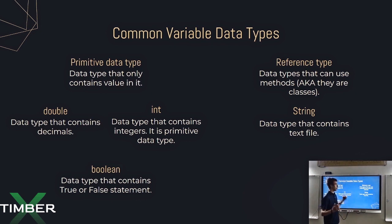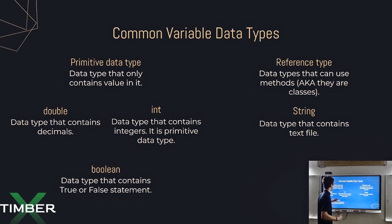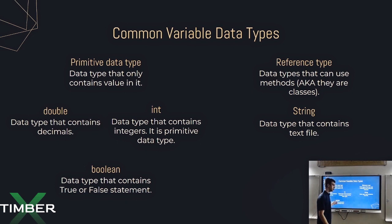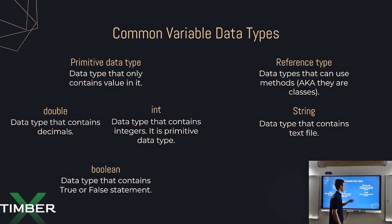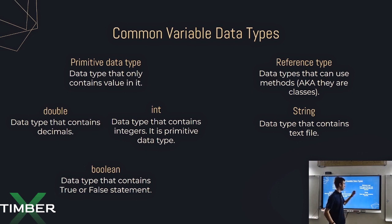Last time we talked about the common variable data types, including primitive data types and reference data types. Primitive data types hold just values — whether it be true or false in the case of a boolean, a number for an integer, or a decimal for a double. In a reference data type, however, you have values as well as functions on top of those values, and we're going to talk more about that in these next few slides.